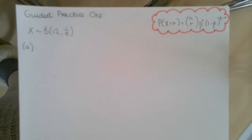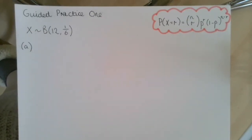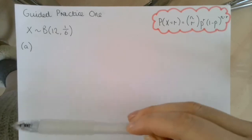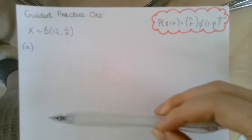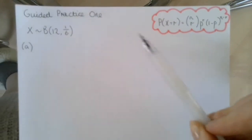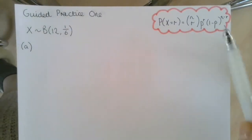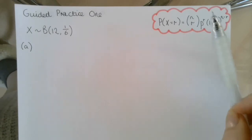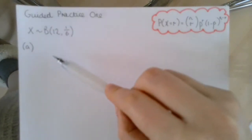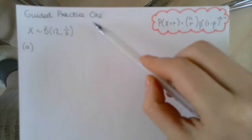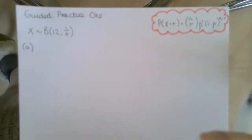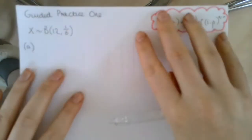We're now going to look at the binomial distribution. The notation for this does look quite complicated, as does the equation for finding the probability of a random variable that is binomially distributed. However, the working out really isn't that tough.